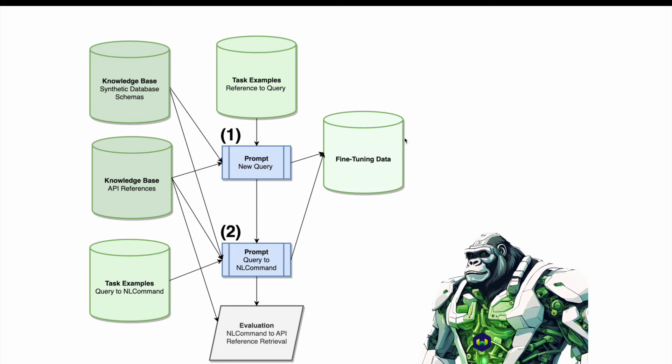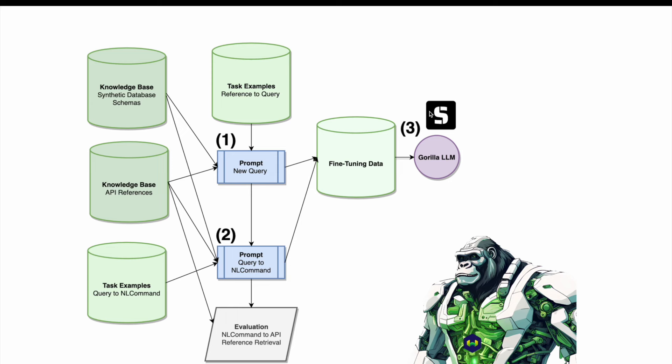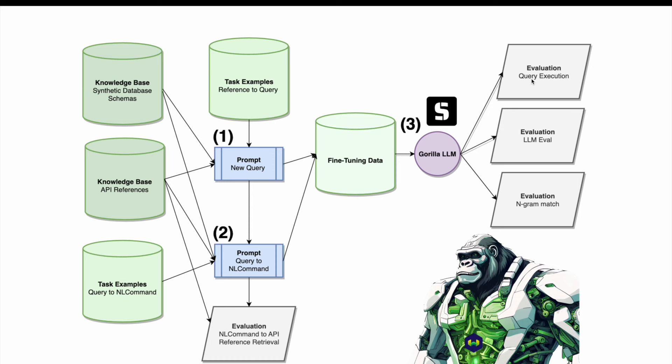We take the new queries and the natural language commands and template them into our fine-tuning data. In the fine-tuning data, the input is the synthetic database schema, the retrieved API reference, and the synthetic natural language command — and we predict the synthetic query. We use Substratus orchestrating Kubernetes and K8s training, also using the HuggingFace PEFT library to train our Gorilla large language model.